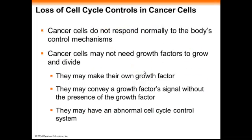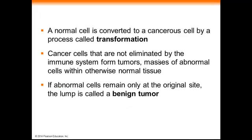For cells that do not have a normal cell cycle control system, they divide uncontrollably — we call these cancer cells. Cancer cells divide without needing any external signals such as hormones or growth factors, or internal signals, so they typically have an abnormal cell cycle control system. To clarify: they don't necessarily get bigger, but they divide out of control and gain in number. Normal cells can be converted to cancerous cells by a process called transformation.